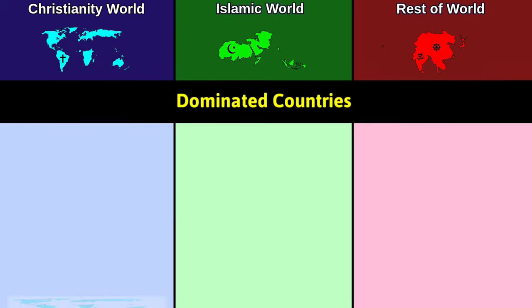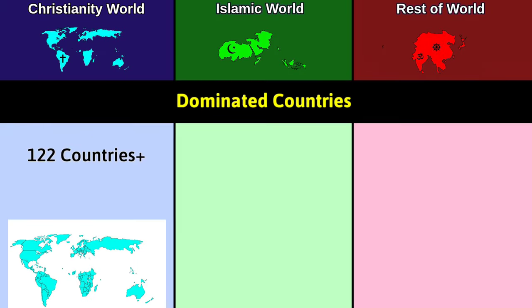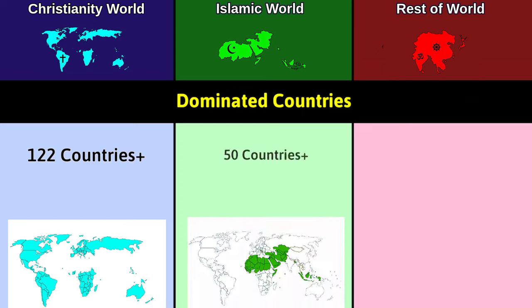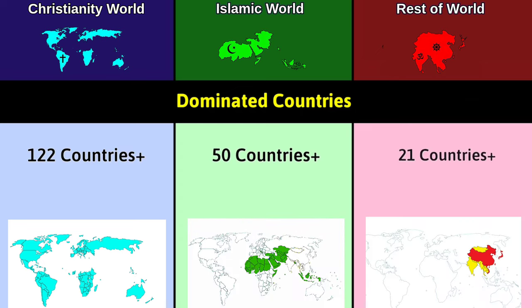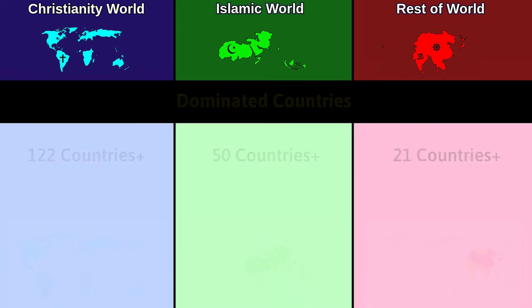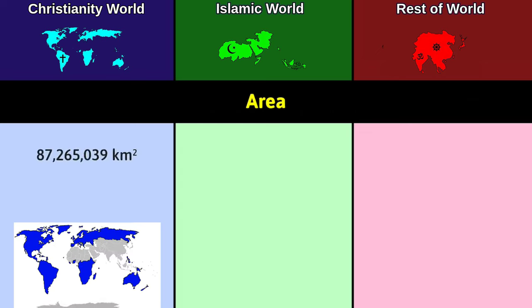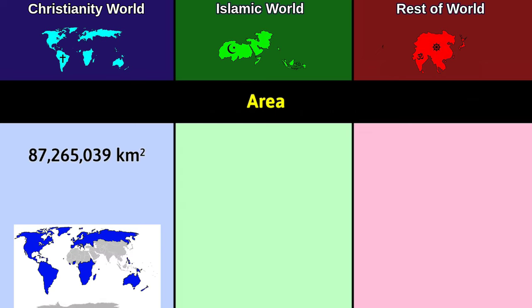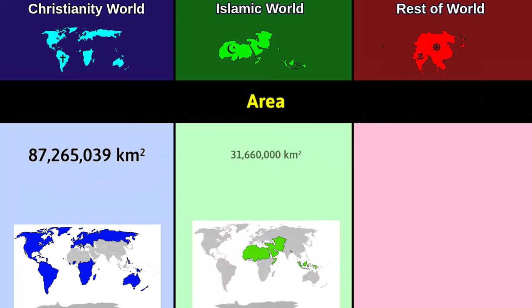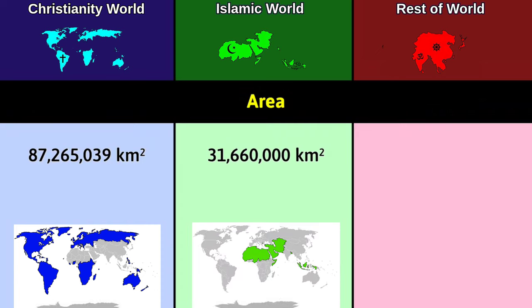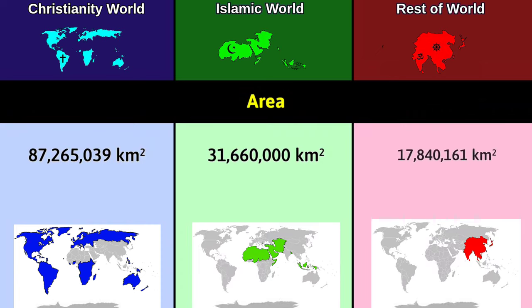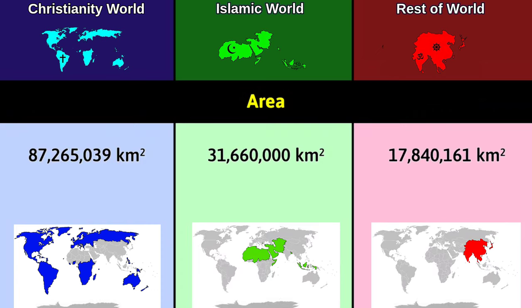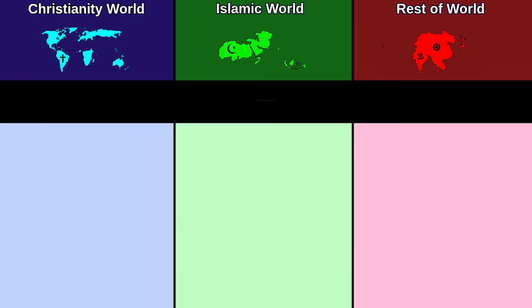Dominated countries: Christianity dominates more than 122 countries, Islam more than 50 countries, and the rest of the world more than 21 countries. Area: Christianity world covers 87.26 million square kilometers, Islamic world 31.6 million square kilometers, and rest of world 17.8 million square kilometers.